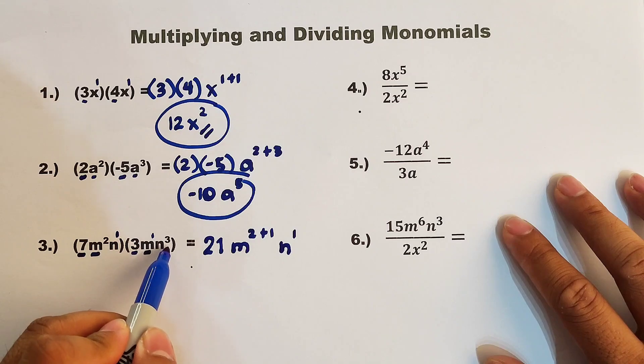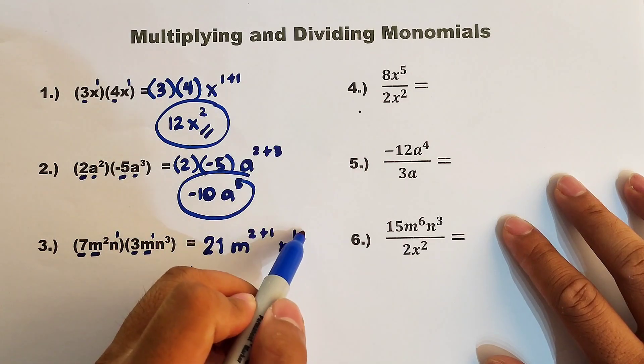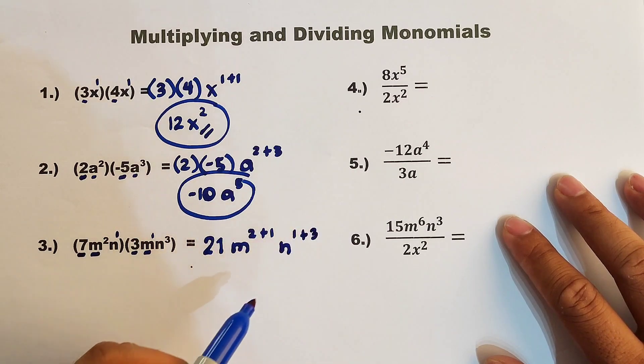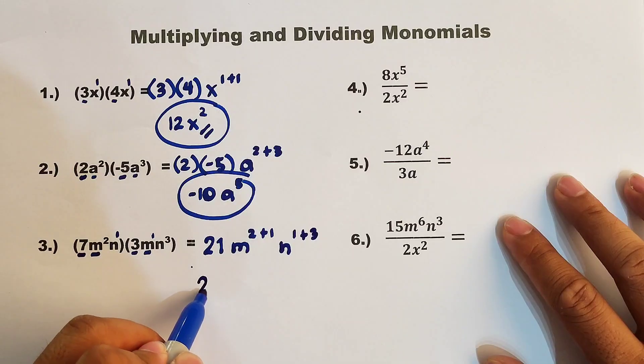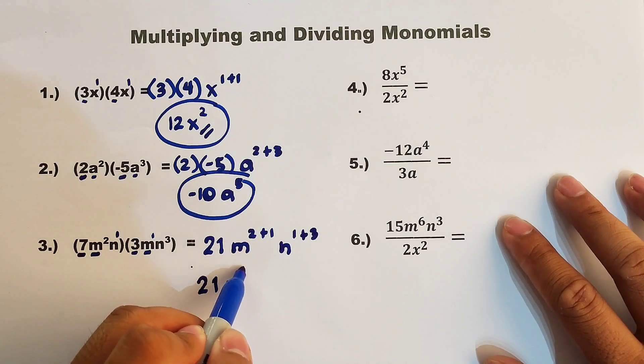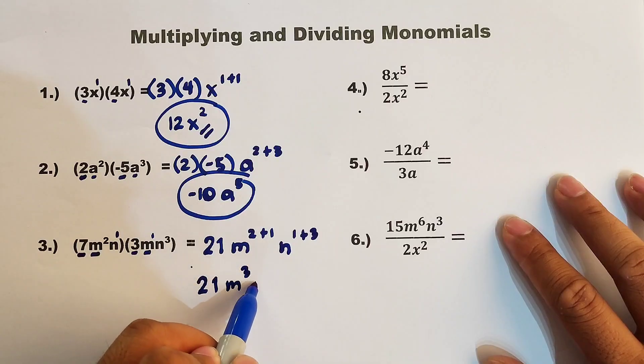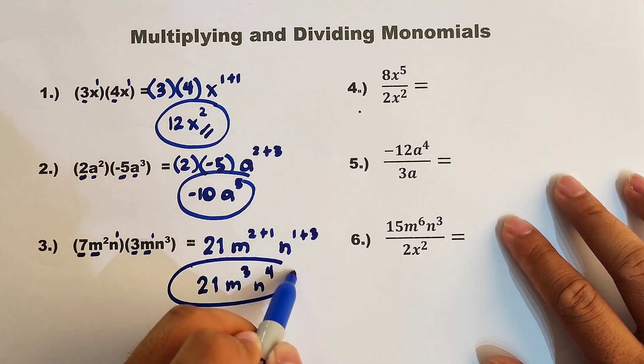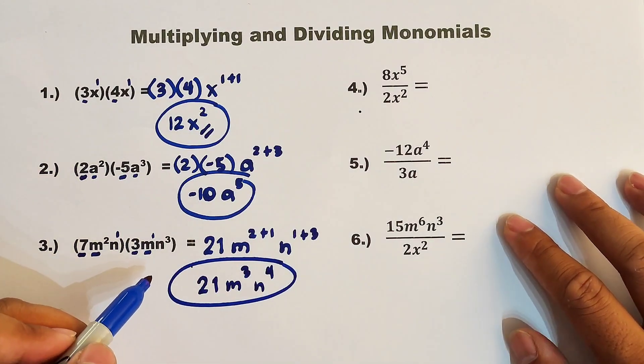On the other part, or the other variable n, that is 3, so plus 3. So we can simplify, we have 21, then for the variable m, that is 3, for the variable n, that is to the 4th power. And this is the product of item number 3.